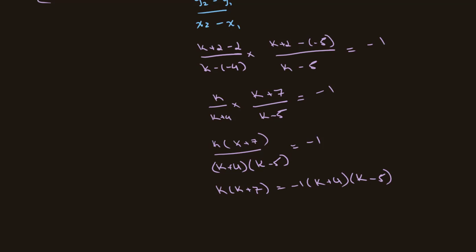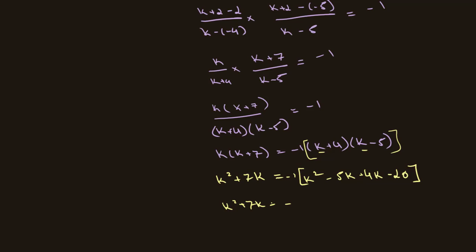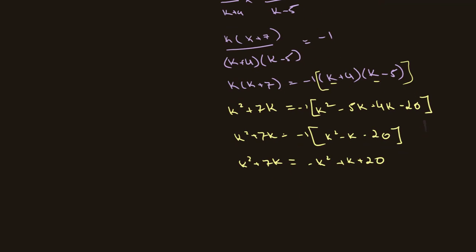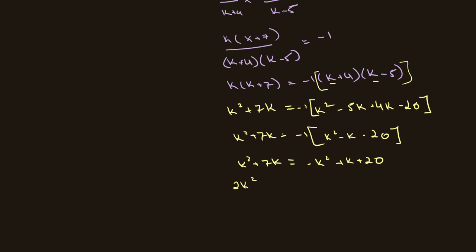We open both sides. From this we get k squared plus 7k equals negative 1 times (k squared minus 5k plus 4k minus 20), which is negative 1 times (k squared minus k minus 20). So k squared plus 7k equals negative k squared plus k plus 20. Rearranging: 2k squared plus 6k minus 20 equals 0, which simplifies to k squared plus 3k minus 10 equals 0.